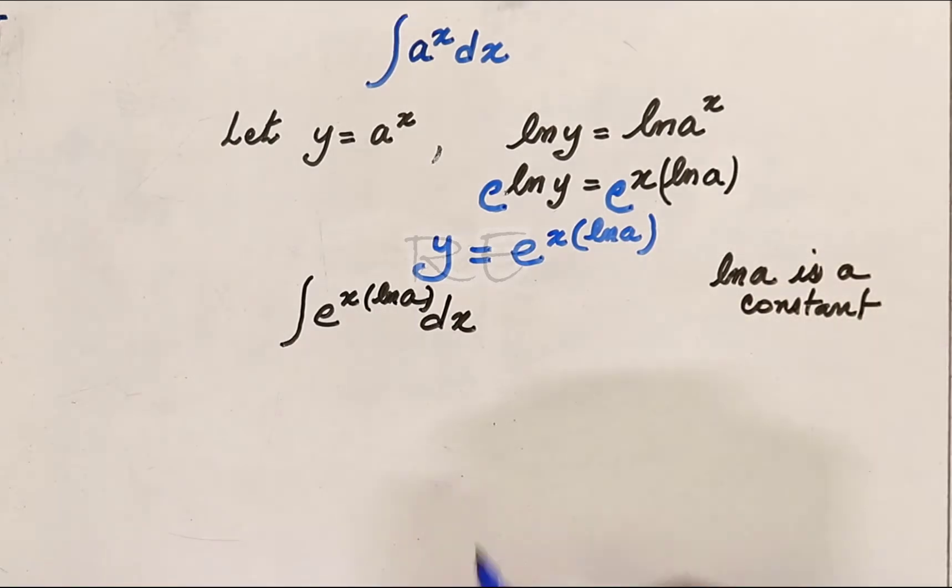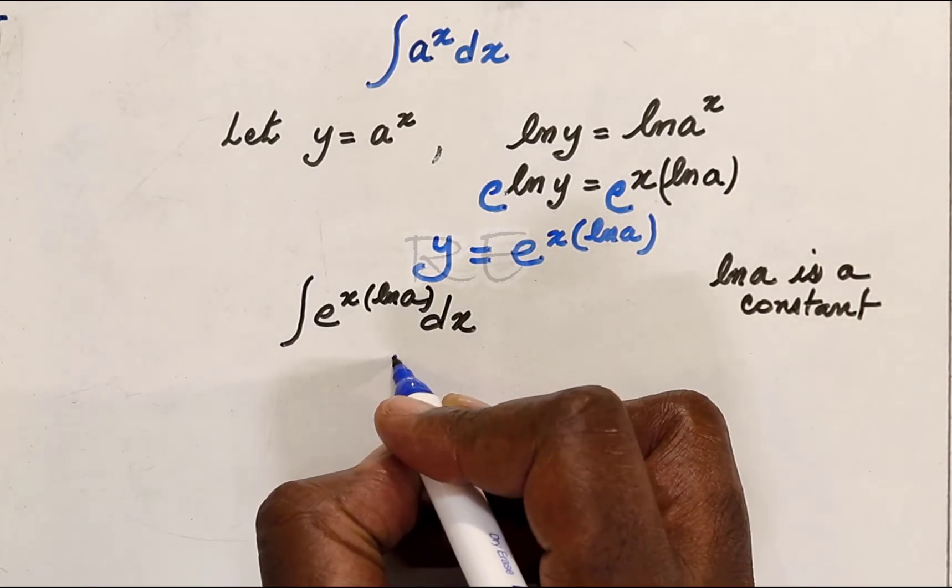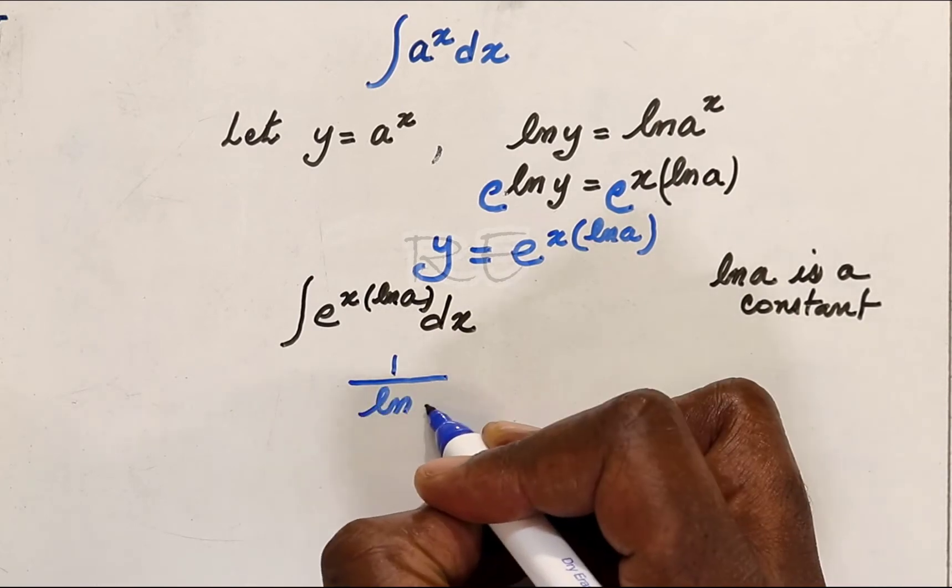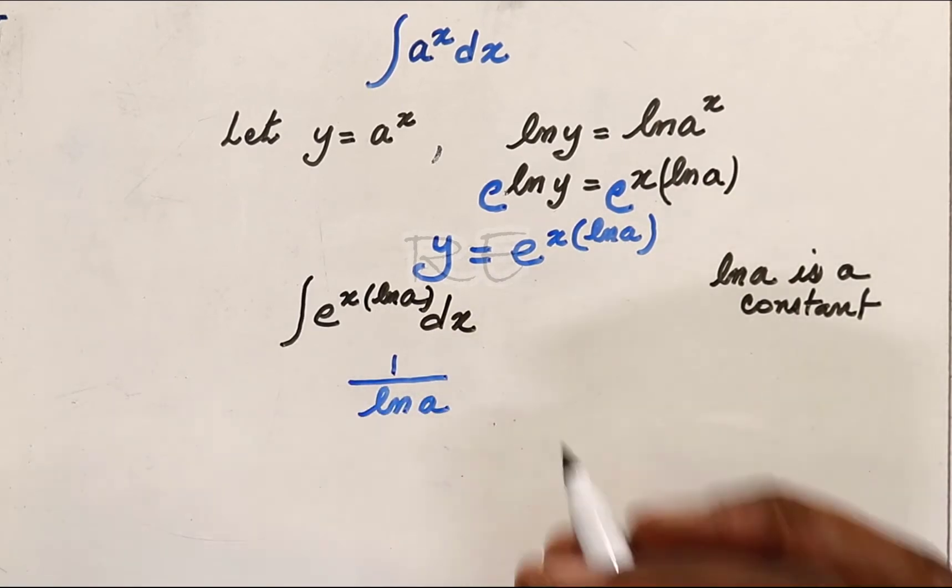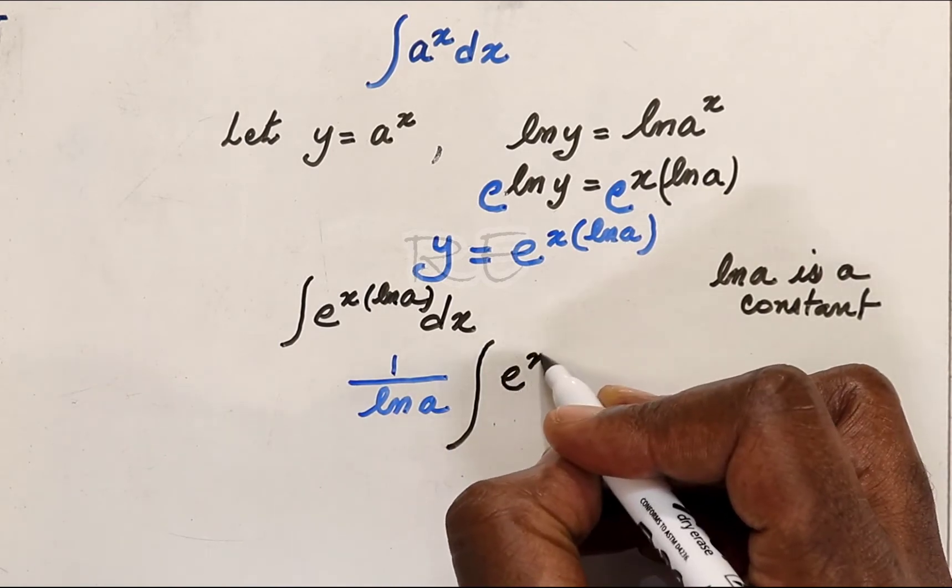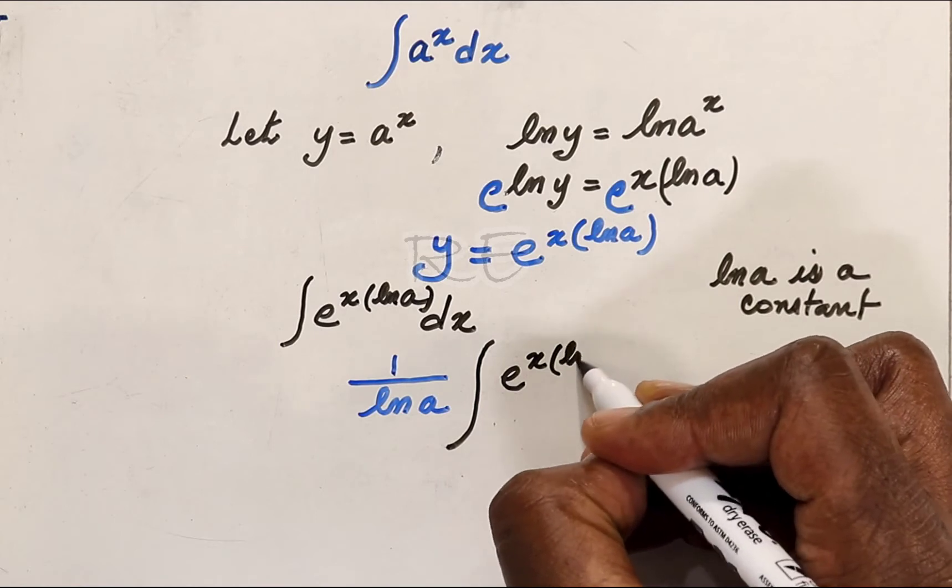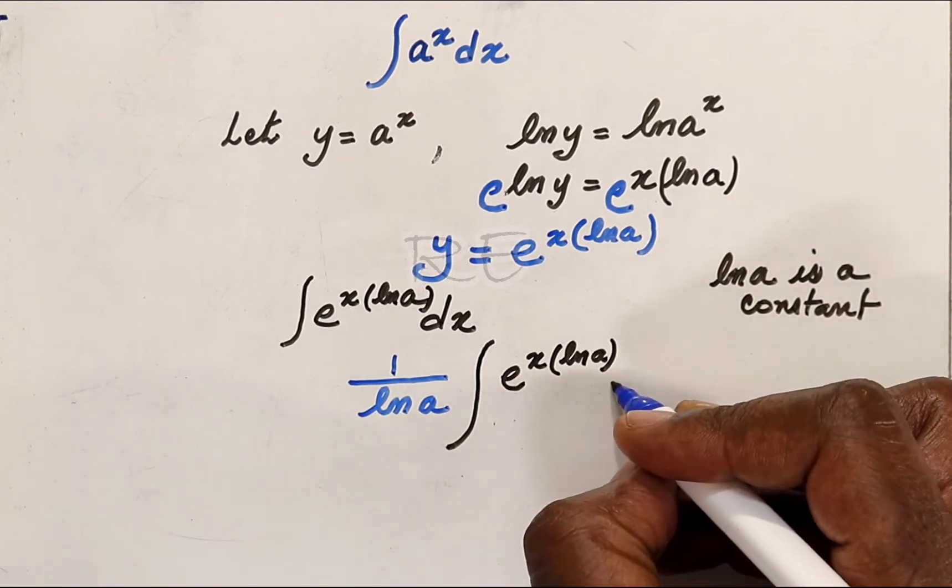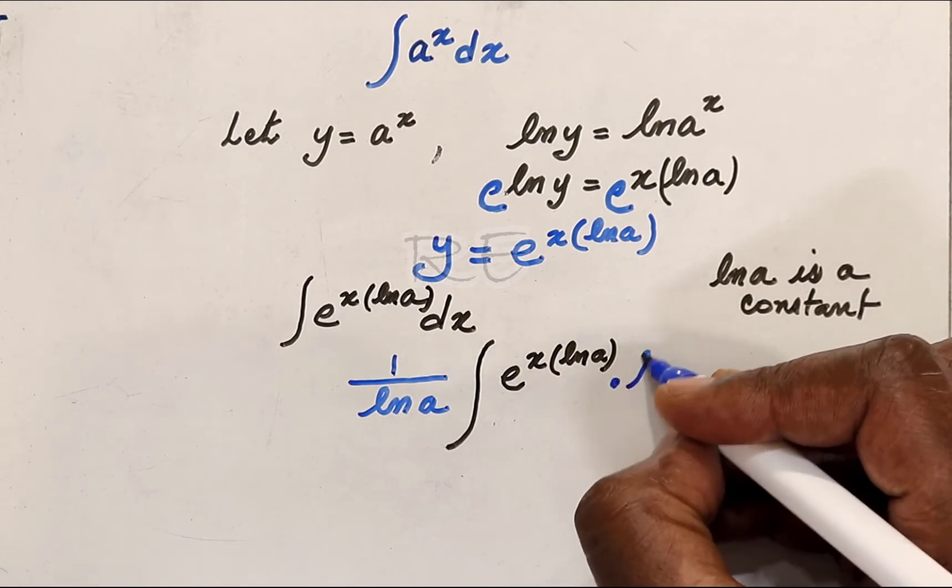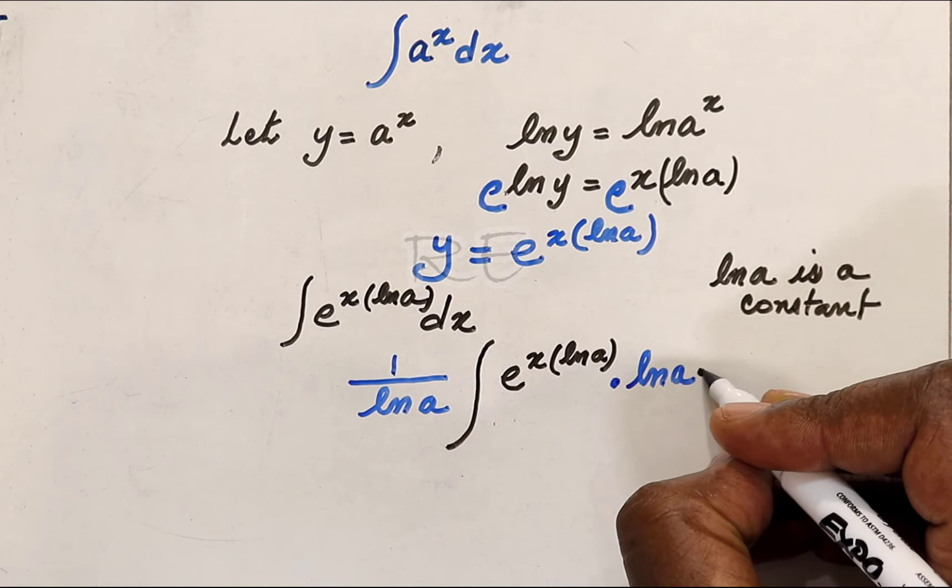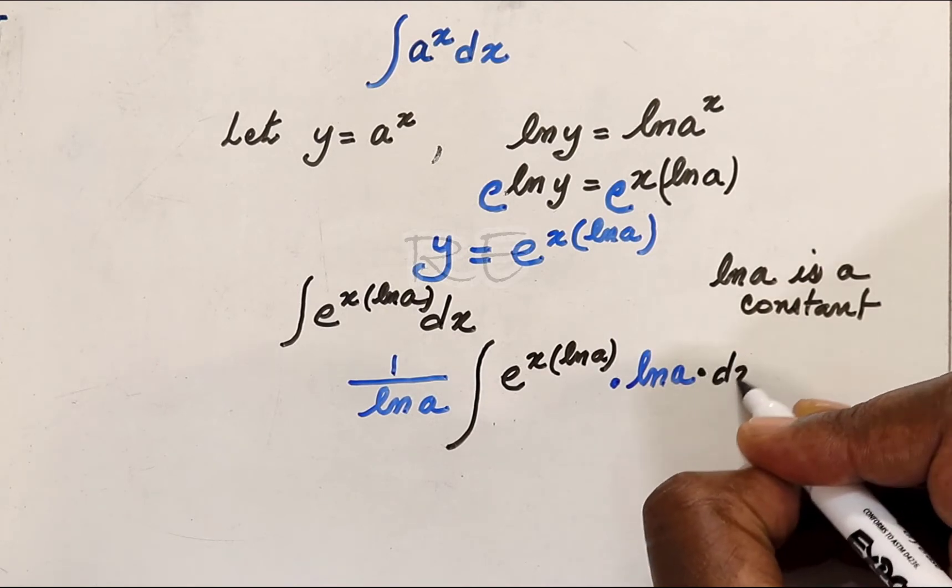Therefore, to integrate e to the x ln a, we need to divide by the constant, which is 1 over ln a, and account for the constant in the integration.